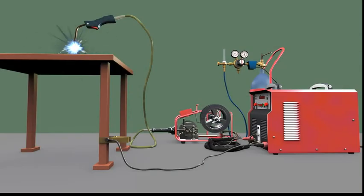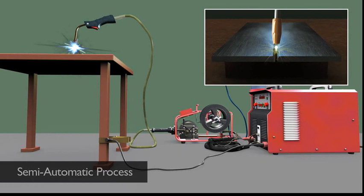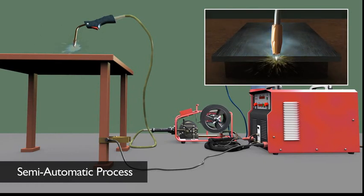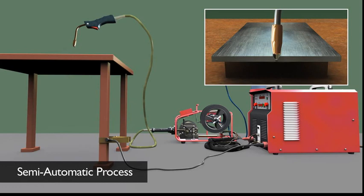The consumable electrode is fed by a wire feeder. Hence, this is a semi-automatic process wherein the welder who was the wire feeder in the SMAW process has been replaced by a wire feeding mechanism.